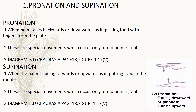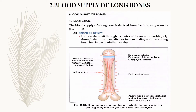The first four-mark question is pronation and supination. Pronation is when the palm faces backwards or downwards, as in picking food with fingers from a plate. These are special movements which occur only at the radio-ulnar joints. You can draw the diagram from BD Chaurasia page 18, figure 1.17. Supination is when the palm is facing forwards or upwards, as in putting food in the mouth. Draw the second diagram from the same figure.